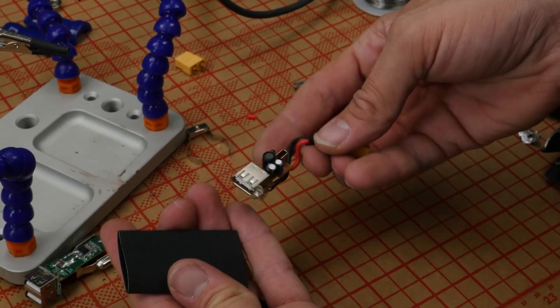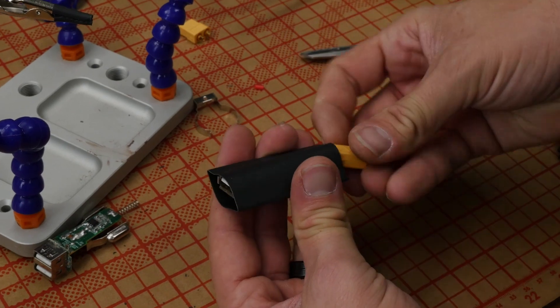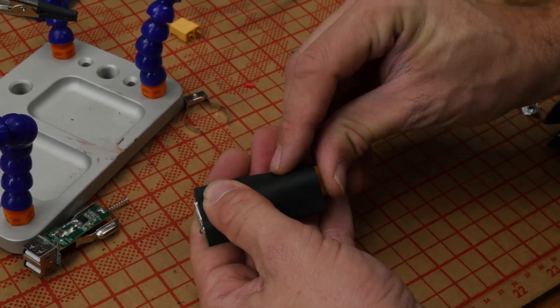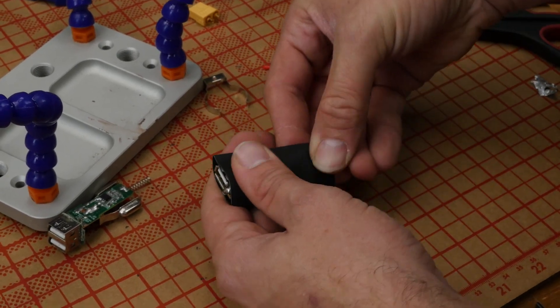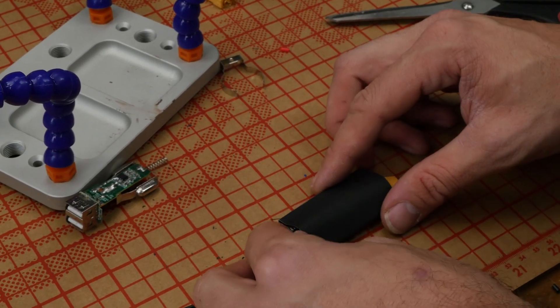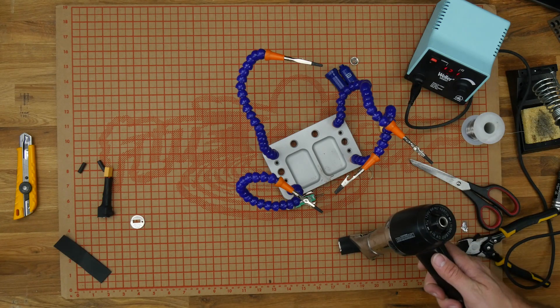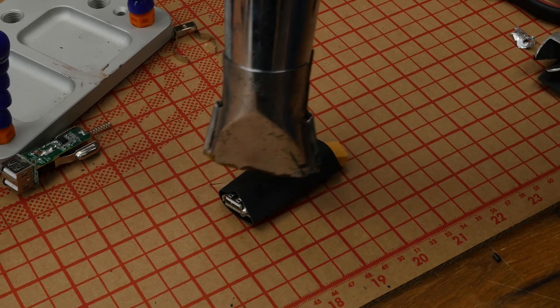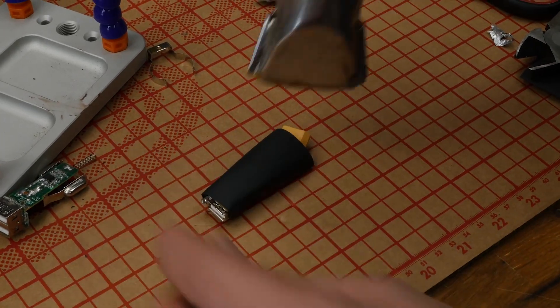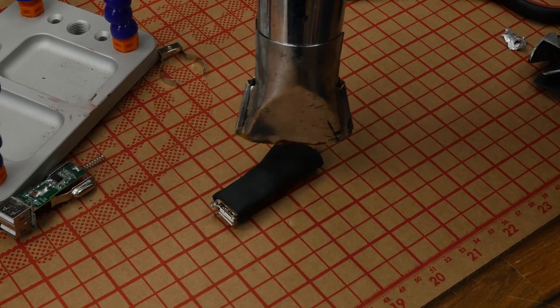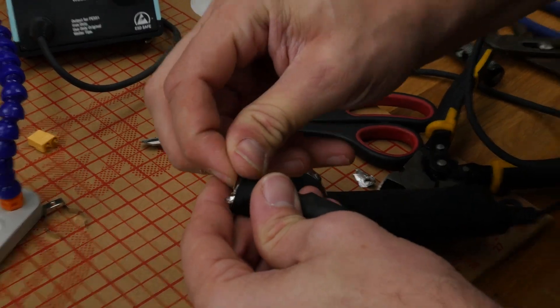So we're going to take our heat shrink tubing and slide this in. I'm going to slide the USB in just ahead so when it shrinks down, it covers this up. I'm going to kind of nicely tuck this in on the other side of the XT60. Reposition a couple of times, just kind of get it to where we want as we shrink it down.